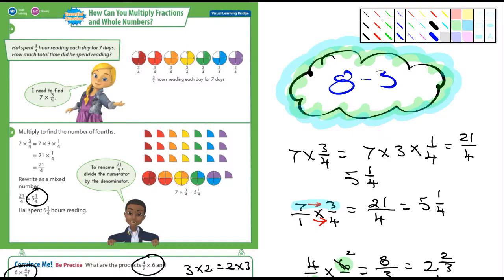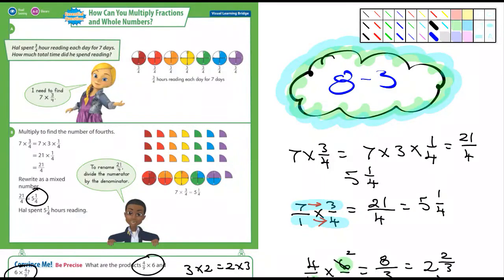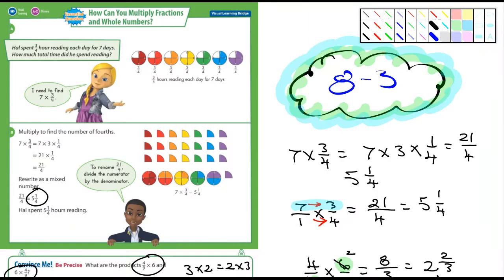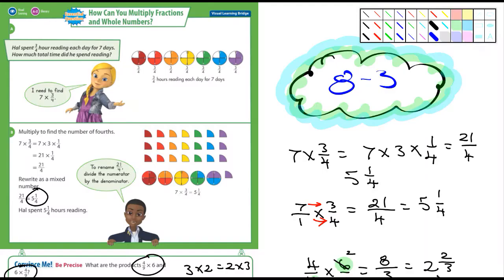They convince me. I talked about that for a moment. And they're asking, what are the products of 4 ninths times 6 and 6 times 4 ninths? Well, it's the same thing. And it's the commutative property where, you know, 3 times 2 is the same thing as 2 times 3. And I've mentioned that before.